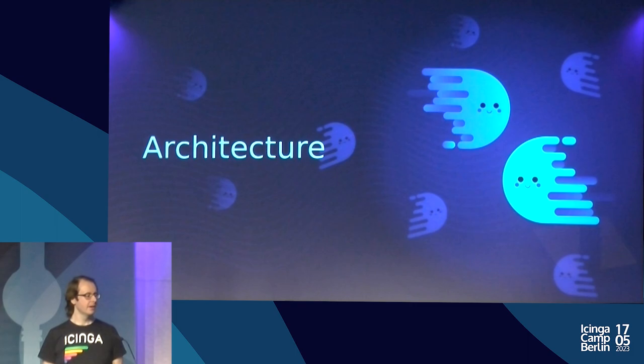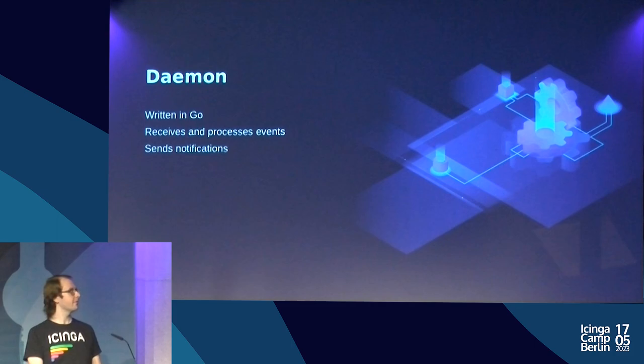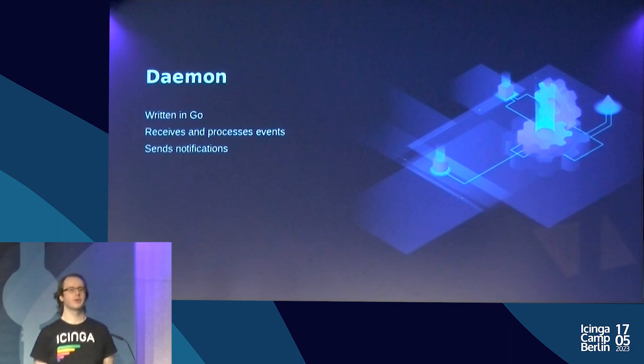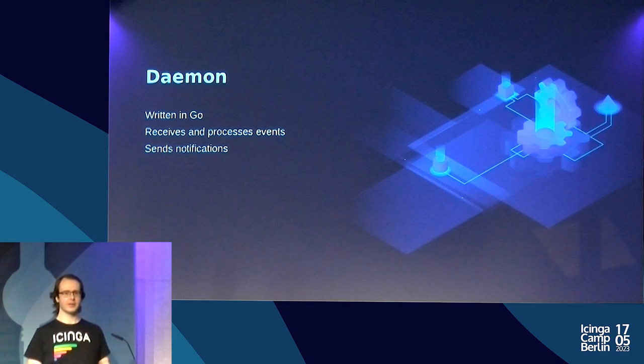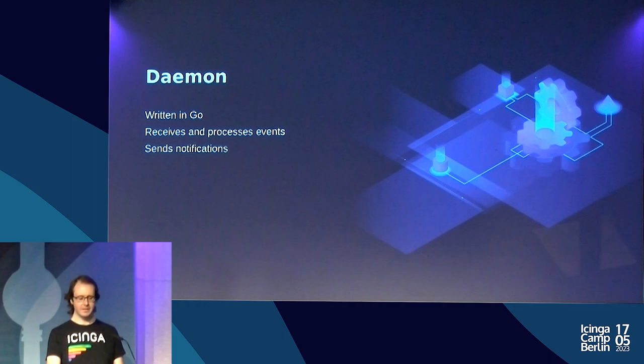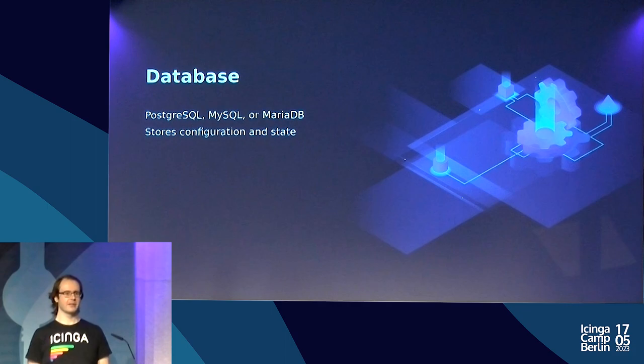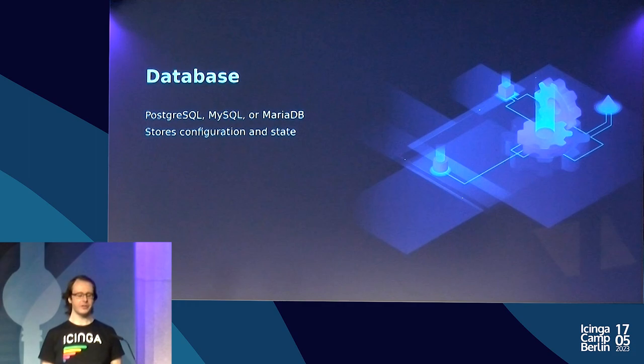Let's talk briefly about the architecture we are building. There is a back-end component, similar to what we're doing with Icinga DB — a daemon written in Go. This will receive input from Icinga 2, X.509 certificate monitoring, vSphere, and so on, and will take care of sending notifications. There will also be a database, similar to Icinga DB, but unlike Icinga DB, this will also store the configuration as primary input.